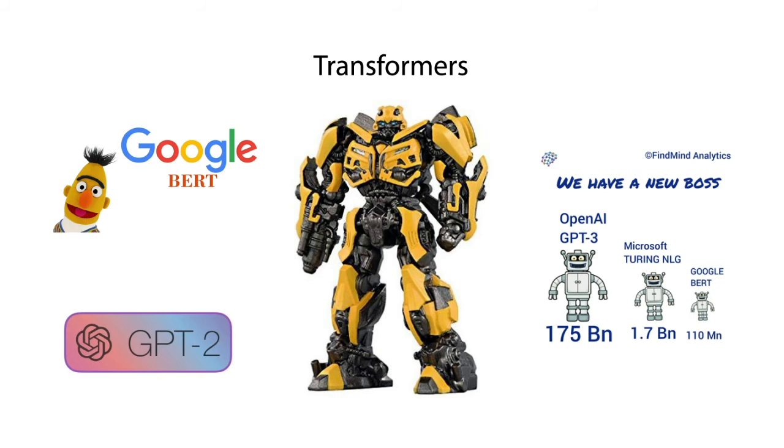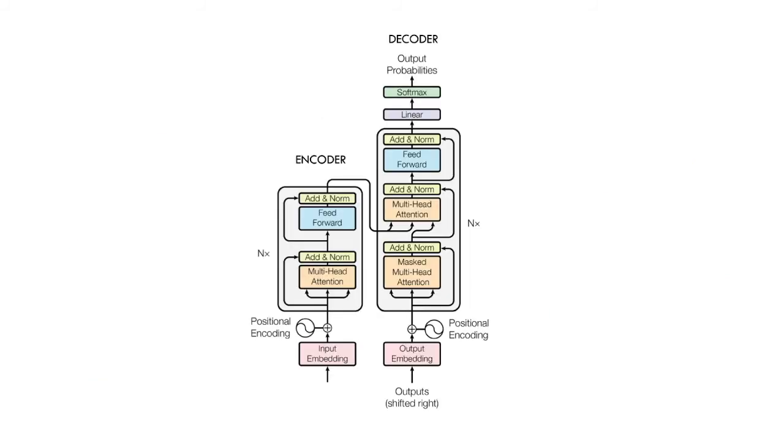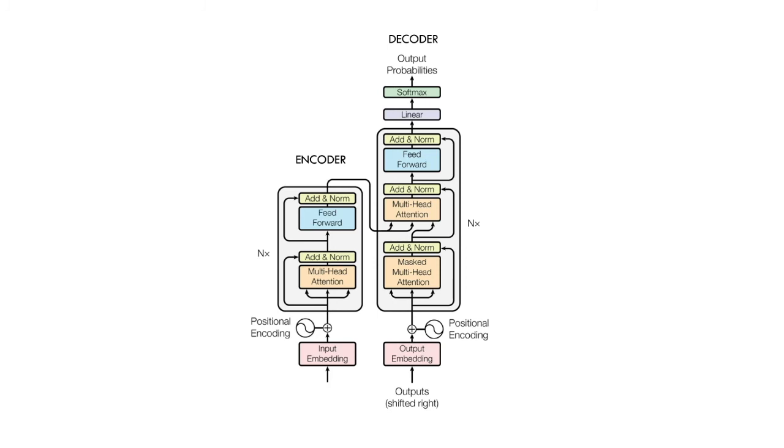Similar to sequence-to-sequence models, a transformer has an encoder and a decoder. The paper, Attention is All You Need, shows following model architecture of the transformer. We will explain the components of this architecture, starting with the encoder.